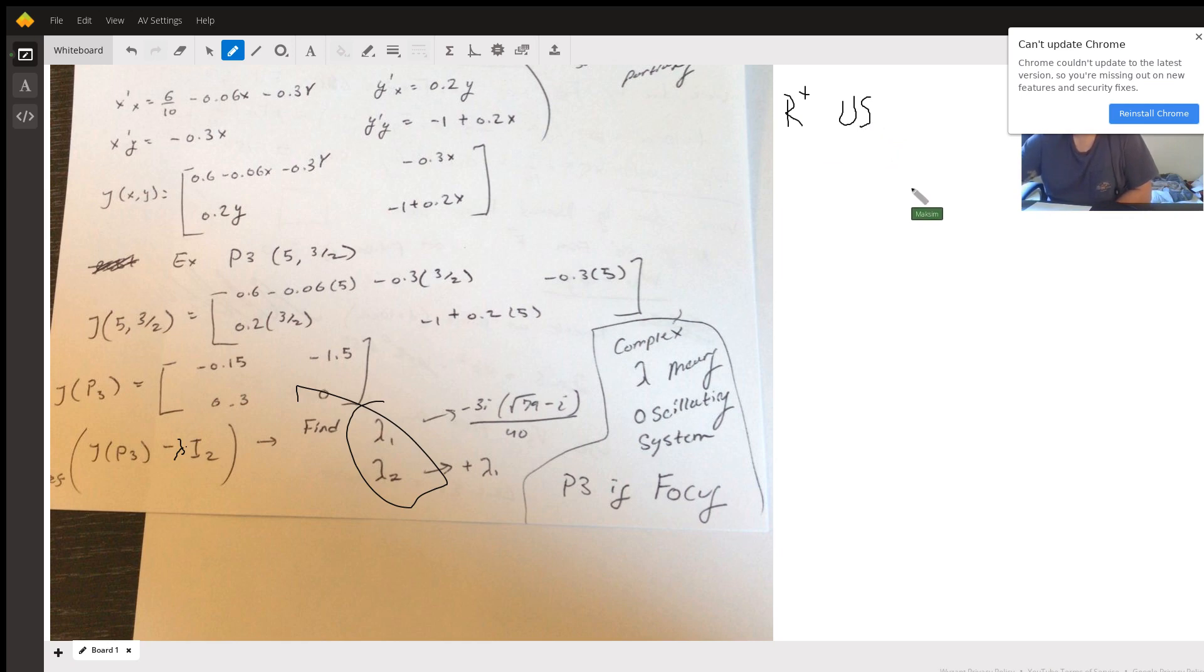When your eigenvalues are real and negative, your stability is stable, you have no oscillatory behavior, and it's called a stable node.